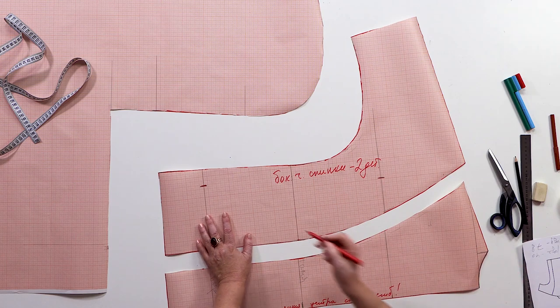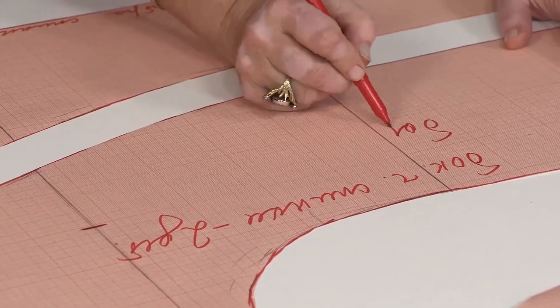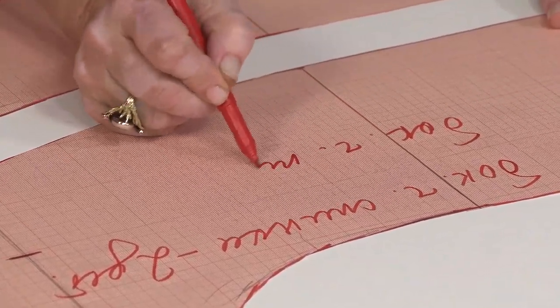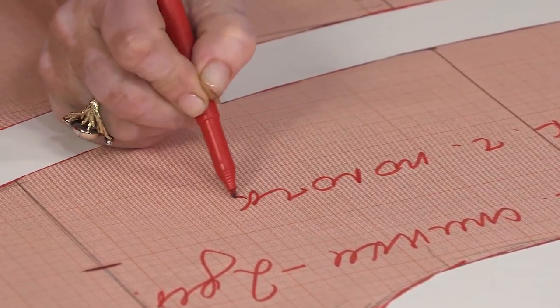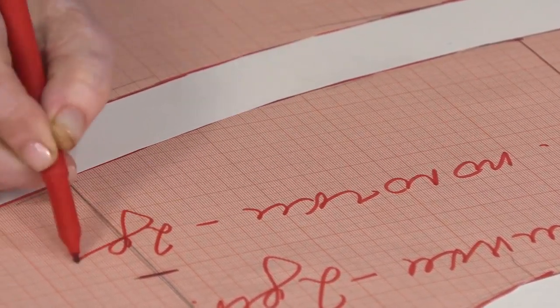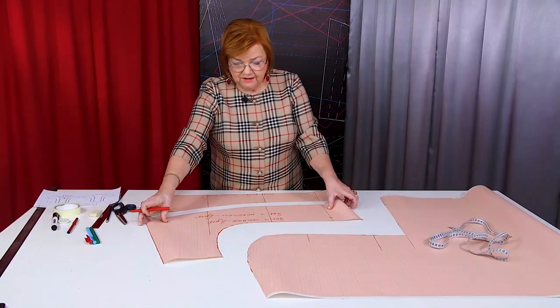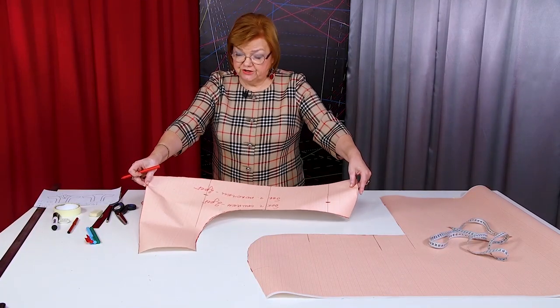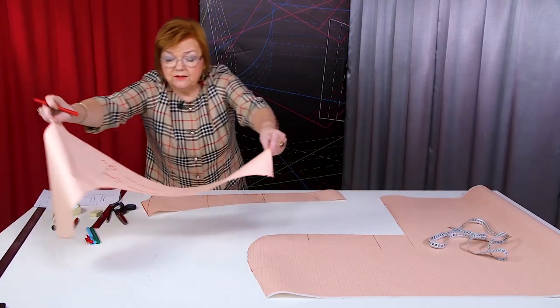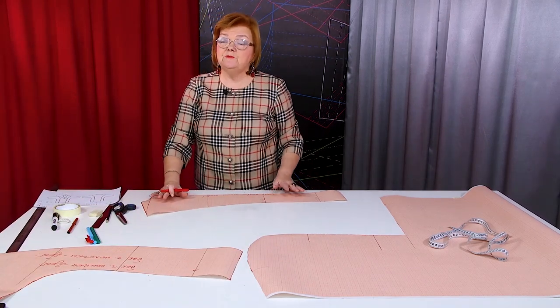They are the same for the front. I'll write it down. So basically, I need to cut four of such details, two for the back and two for the front. I can move the pattern aside.